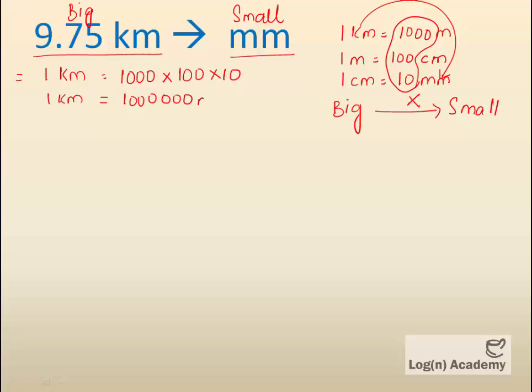Now, 9.75 km equals 9.75 x 1,000,000, which equals 9,750,000 mm.